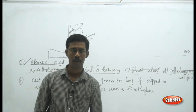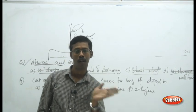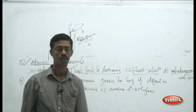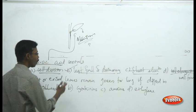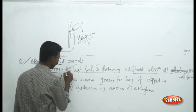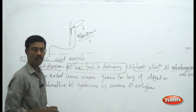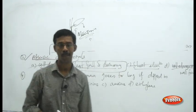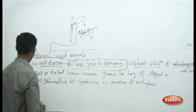The point to remember: abscisic acid is almost opposite to gibberellins. It participates in dormancy and leaf fall from the plant system.